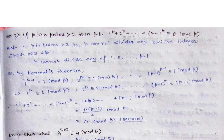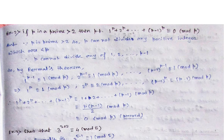Now go to our next problem. We can see a very interesting problem: if P is a prime number greater than 2, then we have to prove that 1 to the power P plus 2 to the power P up to (P minus 1) to the power P — this whole summation will be congruent to 0 under modulus P. Since P is a prime number greater than 2, P cannot divide any positive integer which is less than P — that is the obvious case.